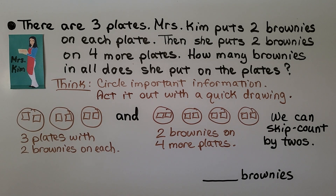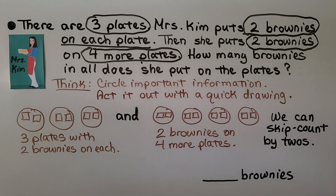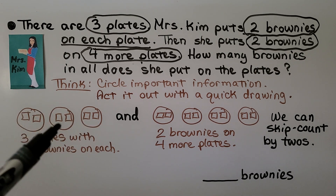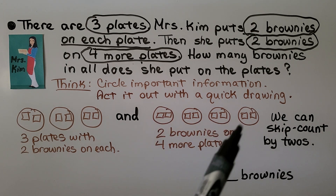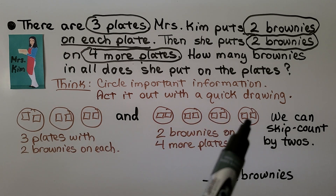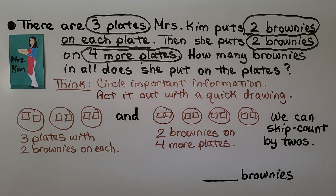There are three plates. Mrs. Kim puts two brownies on each plate, then she puts two brownies on four more plates. How many brownies in all does she put on the plates? We circle the important information: three plates with two brownies on each, then two brownies on four more plates. We act it out with a quick drawing and skip count by twos: two, four, six, eight, ten, twelve, fourteen. That makes 14 brownies in all.